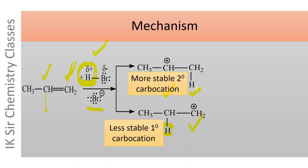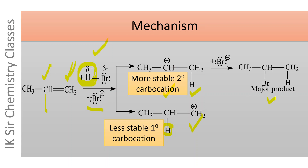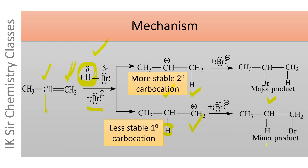The secondary carbocation is more stable than the primary carbocation. In the next step, Br⁻ ion attacks on the positively charged carbon atom. When Br⁻ attacks on the secondary carbocation, the product is 2-bromopropane. When Br⁻ attacks on the primary carbocation, we get 1-bromopropane. Since the secondary carbocation is more stable, 2-bromopropane is obtained as the major product, while 1-bromopropane is obtained as the minor product.